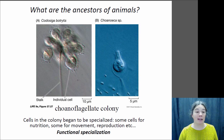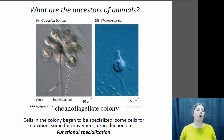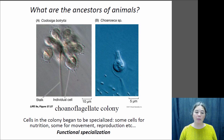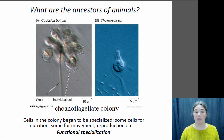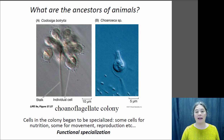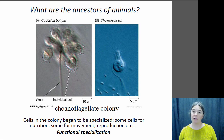The common ancestor of all animals was some sort of protist and it probably resembled this little creature here, which is called a choanoflagellate. Choanoflagellates are single-cellular creatures, but they do group up to form colonies where they live together.